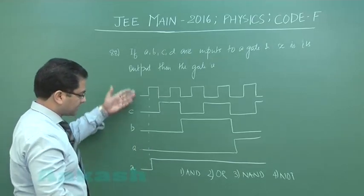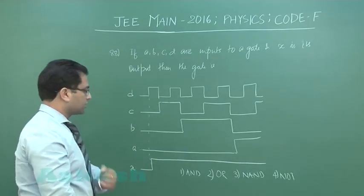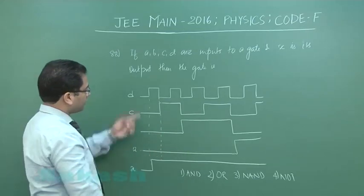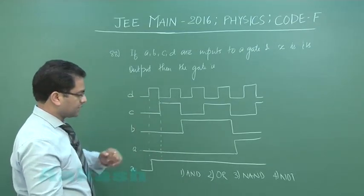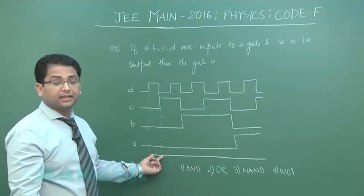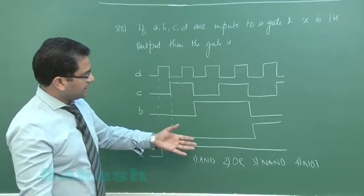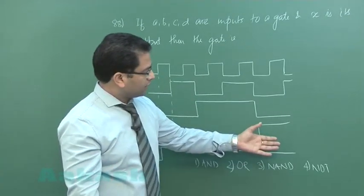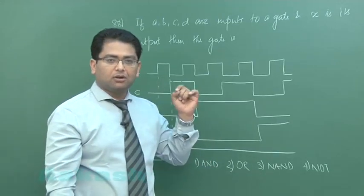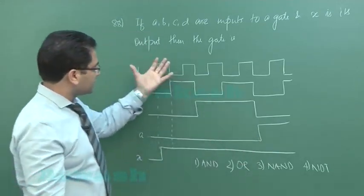At the second pulse, try to see 1, 0, 0, 0. For this, this is 0 and this is 1, the output is 1. In that way you have to interpret. Now you need to see which of these four options represents the possible gate that satisfies these waveforms.